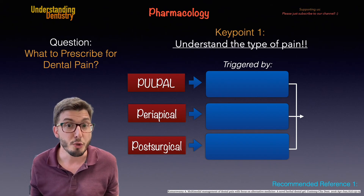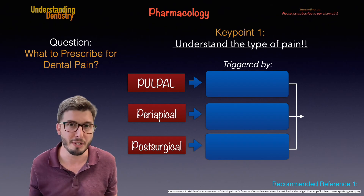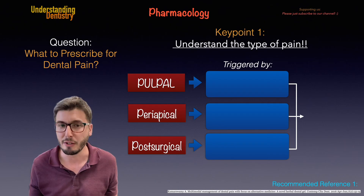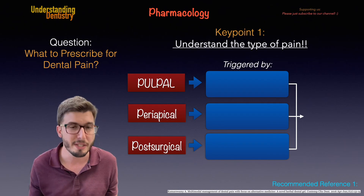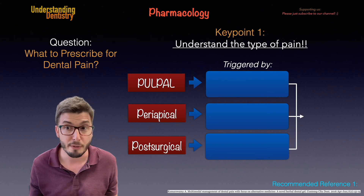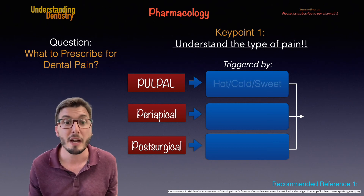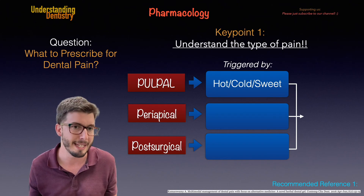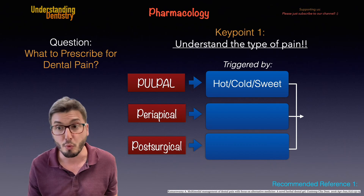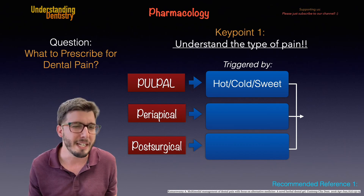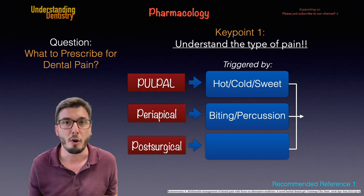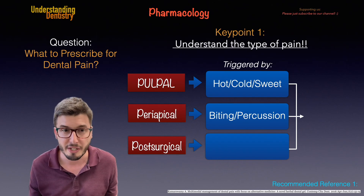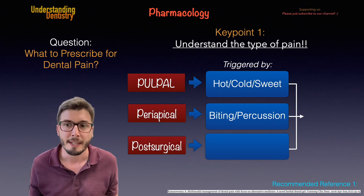Those pains are usually triggered by different factors. We start with the pulpal pain, which is basically triggered by hot, cold, or sweets — that's how it's described by the literature. Then we have the periapical pain, which is felt when the patient is biting, and tenderness to percussion usually indicates periapical pain as well.